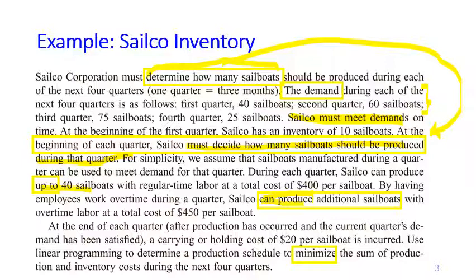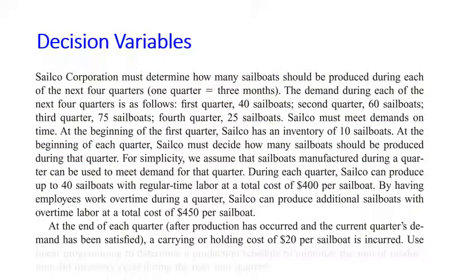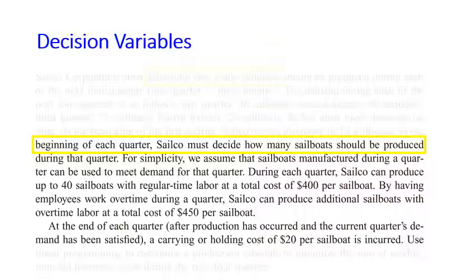Finally, the problem asks us to minimize the sum of production and inventory costs during the next four quarters. Now let's define the decision variables. The first decision variable is how many sailboats should be produced during each quarter. We name this xt, which is the number of sailboats produced during quarter t.